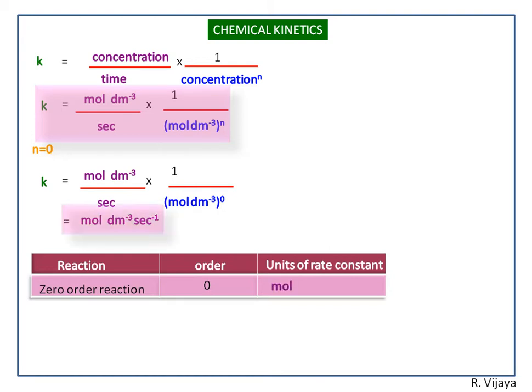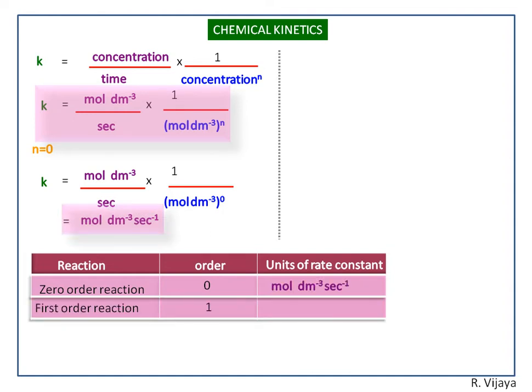Next we calculate for the first-order reaction, that is n equals one. If we substitute n equals one in this formula, the numerator and denominator terms of mole per decimeter cube will be cancelled out. So we have only per second. This is the unit of rate constant for first-order reaction.